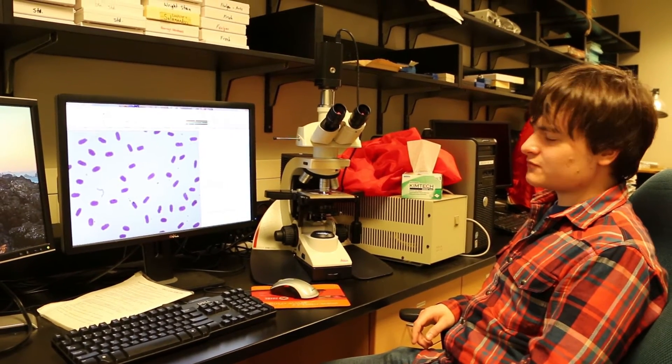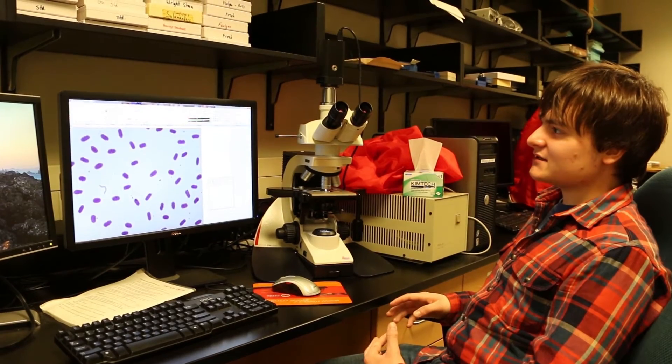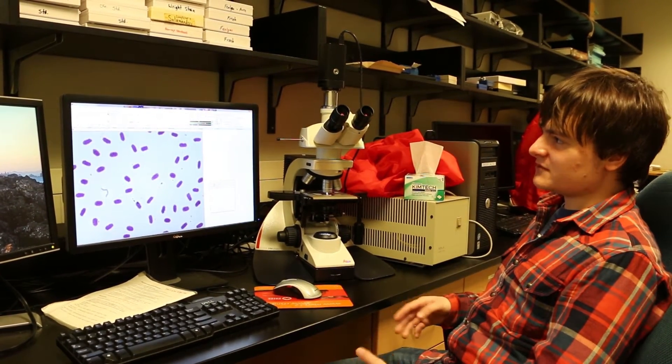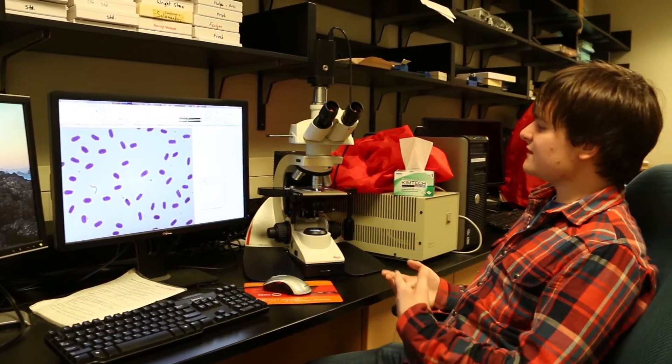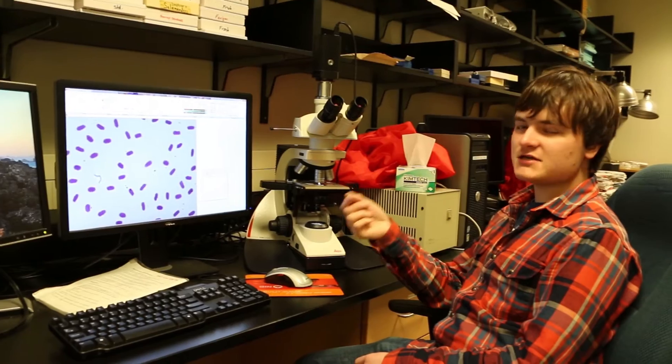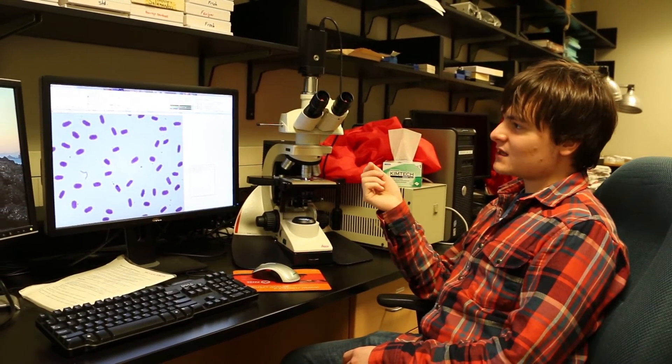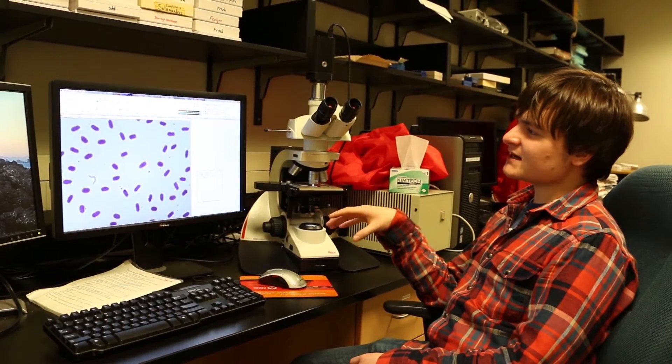And the way this actual process of analyzing genome size works is it uses a technique called Feulgen image analysis densitometry. So you stain the blood on the microscope slide using Schiff reagent, which is a stain, and that stain stains the DNA on the slide selectively.